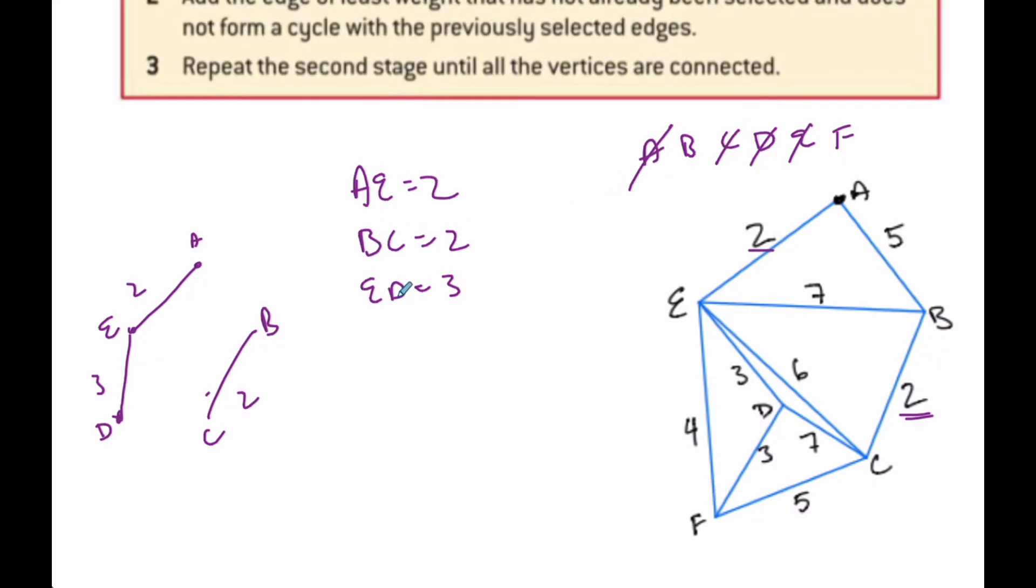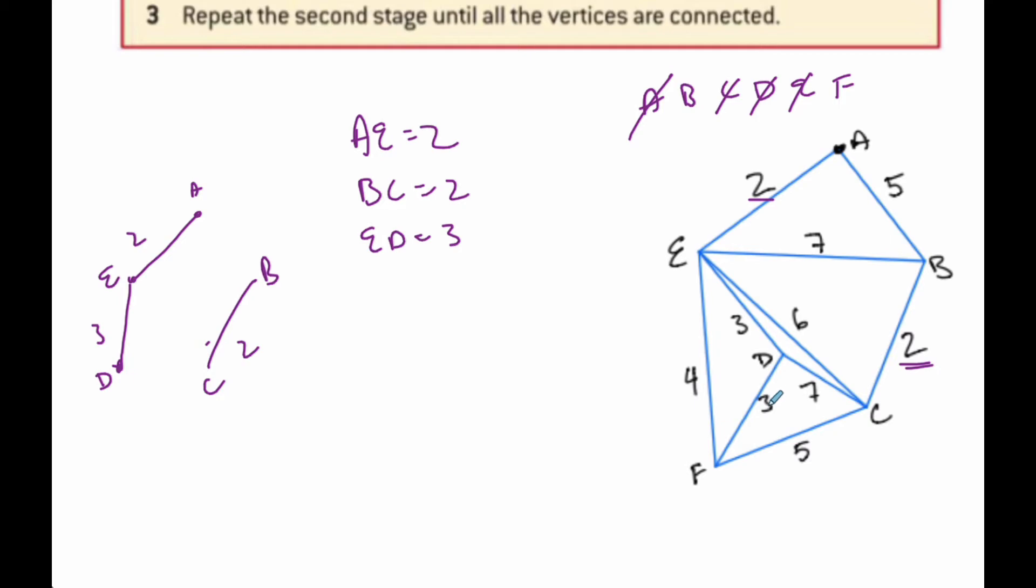And then I can also do the next 3, which is D to F. So then I can go D to F. D to F is 3. And so I'm going D to F equals 3. And so F is taken care of.